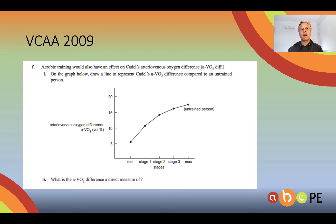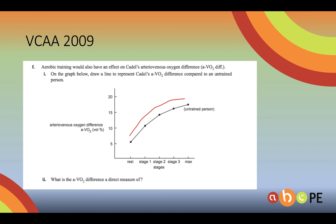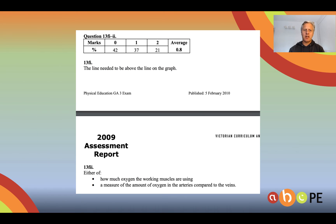Here is a VCAR question for you to attempt now. A trained athlete should show an AvO2 difference above that of an untrained person. We should also understand that AvO2 difference is a measure of how much oxygen is being utilised.